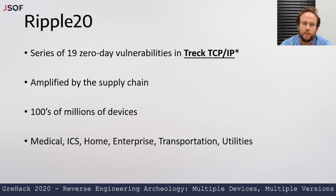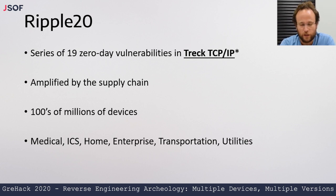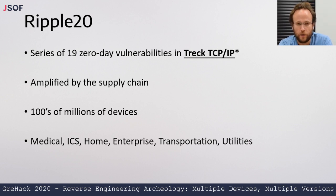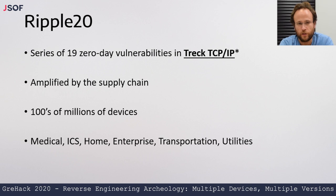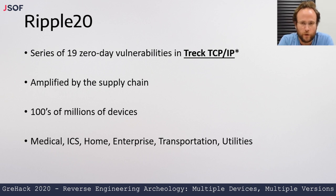Ripple 20 is a series of 19 zero-day vulnerabilities in a TCP/IP communication stack called Trek TCP/IP. These resulted in 24 unique patches. Two of the vulnerabilities were reported anonymously while the rest were reported by JSOF. They were bundled into 19 unique CVEs.